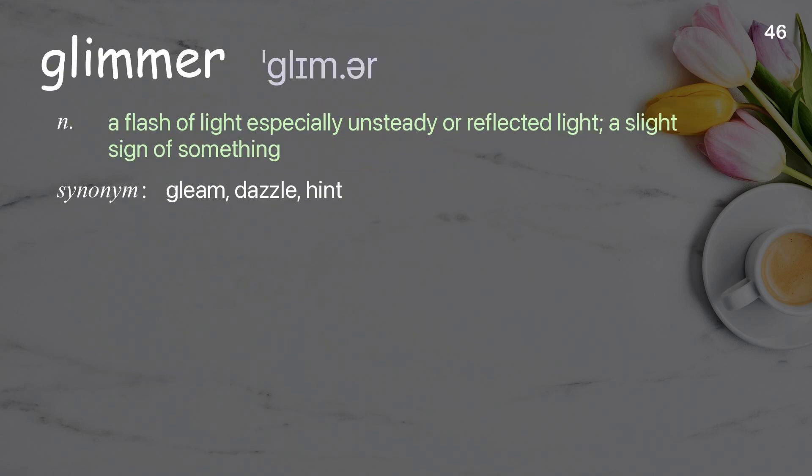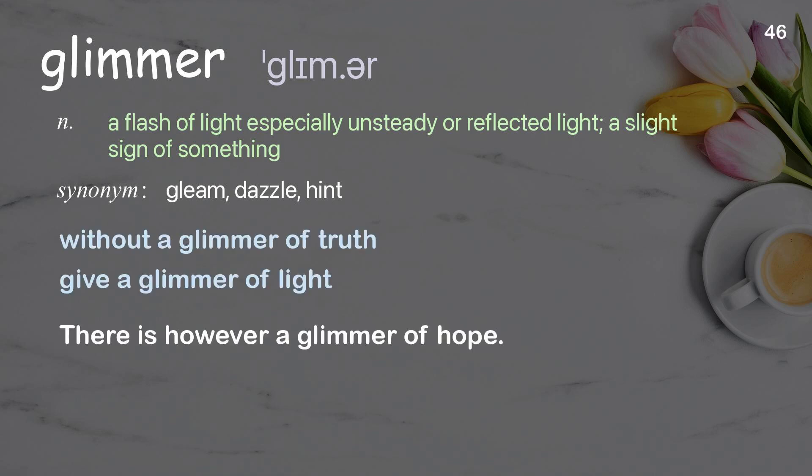Glimmer: a flash of light, especially unsteady or reflected light; a slight sign of something. Examples: without a glimmer of truth; give a glimmer of light. There is, however, a glimmer of hope.